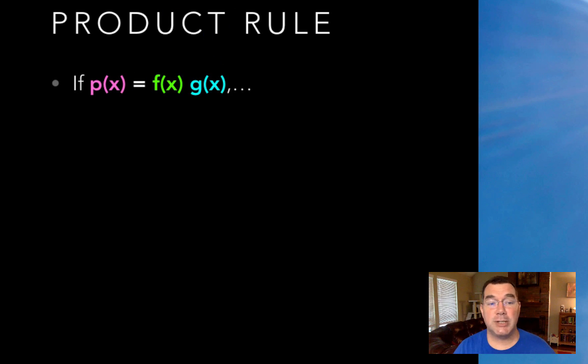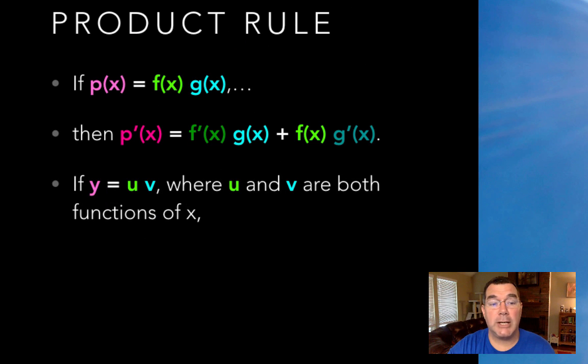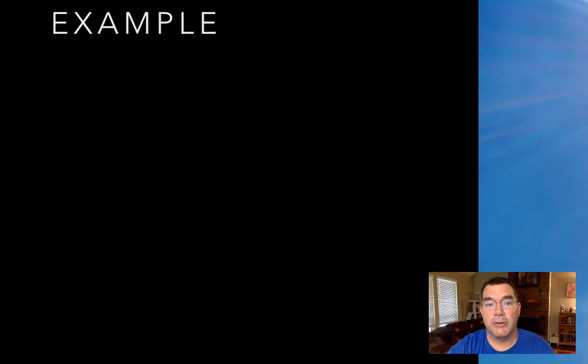If I have a function that is made up of the product of two smaller functions, then the derivative is going to be the derivative of the first function times the second function, plus the first function times the derivative of the second function. So if y is some function u times another function v, then the derivative is going to be v times du dx plus u times dv dx, and we need to know both of those definitions in order to find the derivatives.